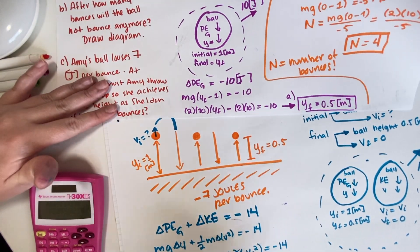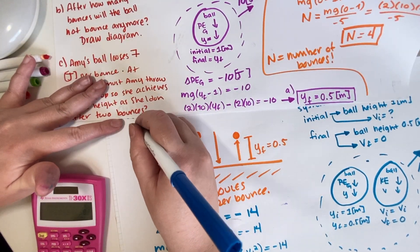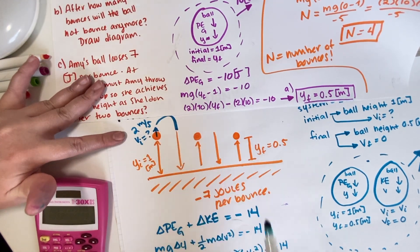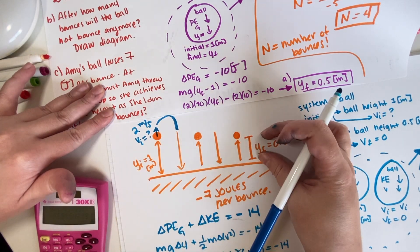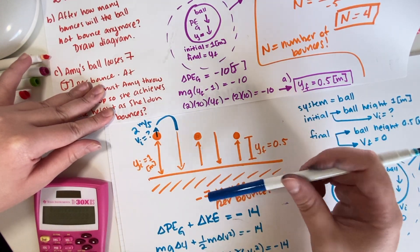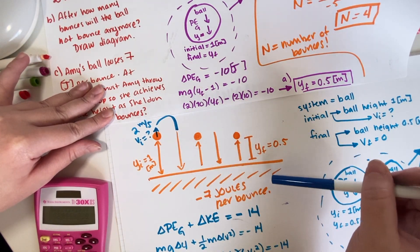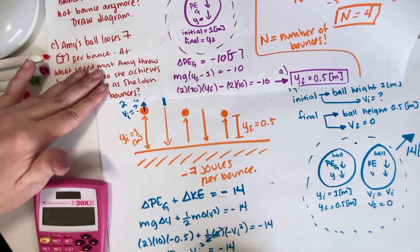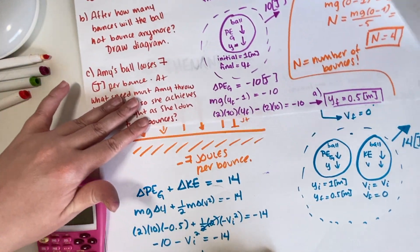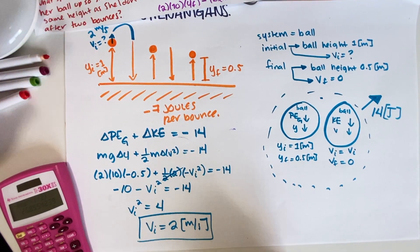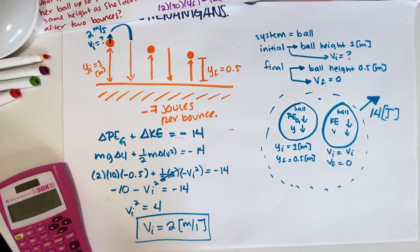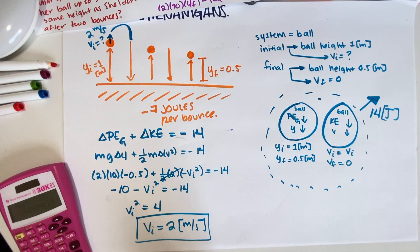So 2 meters per second is the velocity at which Amy needs to launch her ball upward in order to achieve the same height as Sheldon, despite losing more energy per bounce. This is the end of the practice problem — I hope you found it useful. Please make sure to leave a like; it costs you nothing and really helps promote this channel. If you have any questions, please leave them in the comments below.